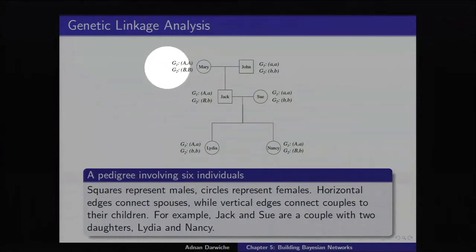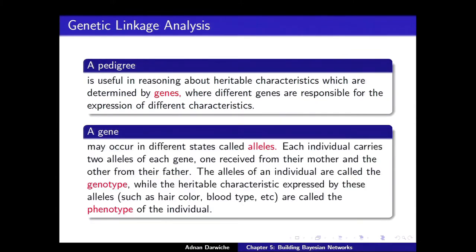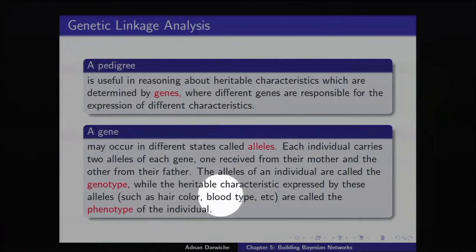Think of a gene as a variable, and the value of this variable is a pair. A gene may occur in different states called alleles. Each individual carries two alleles for each gene — one received from their mother and the other received from their father. The alleles of an individual are called the genotype, while the heritable characteristic expressed by these alleles — such as hair color, blood type, etc. — is called the phenotype.